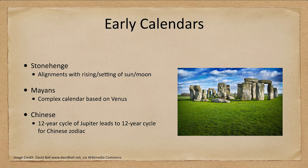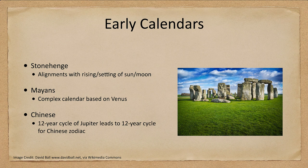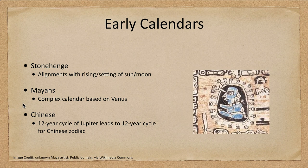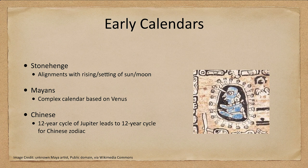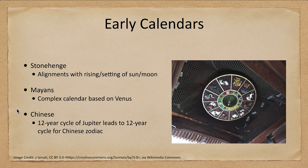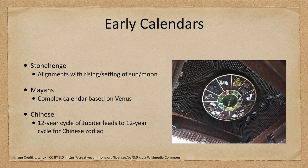So some of the early calendars, we looked at Stonehenge previously, Stonehenge had alignments with the rising and setting of the sun and the moon. The Mayans had a complex calendar that was based on Venus, based on the orbit and observations of Venus. And the Chinese use a 12 year cycle of Jupiter which gives us the 12 year cycle for the Chinese zodiac. So different calendars based on different motions. So we're not just using those but other cultures have used other observations and not just the sun and the moon.